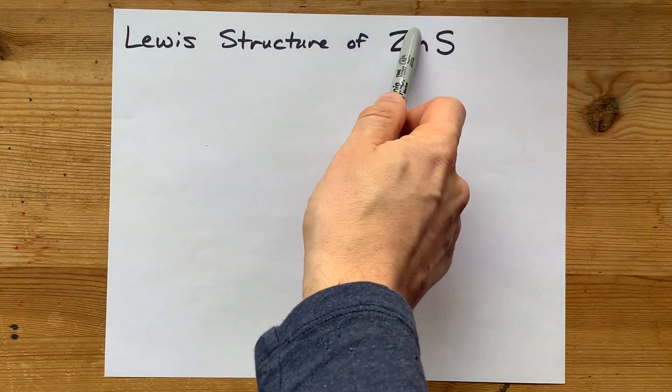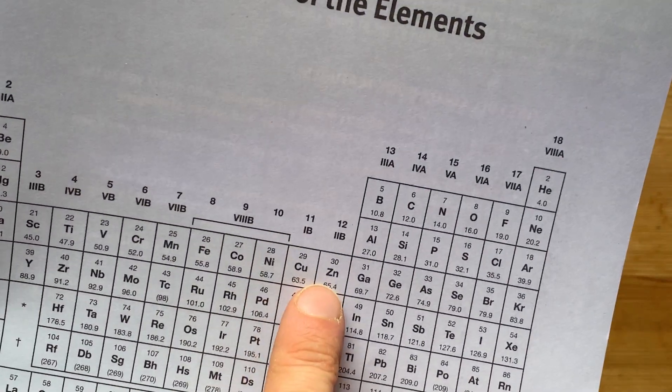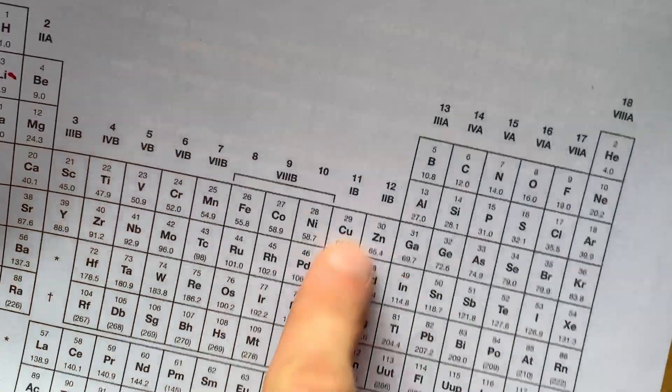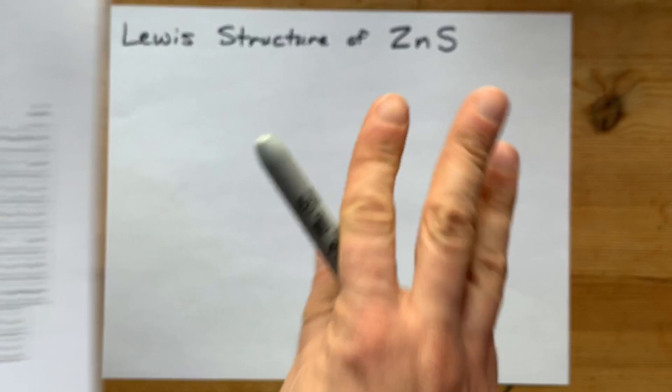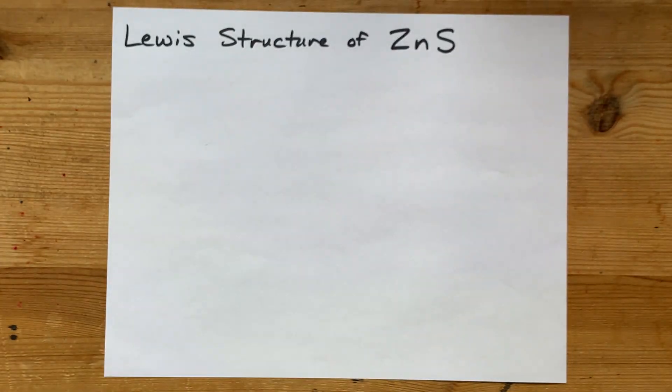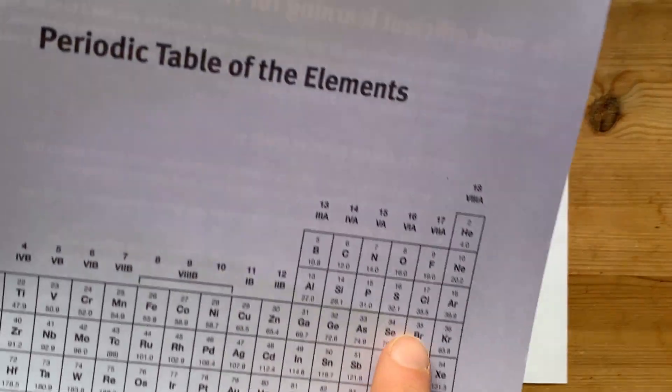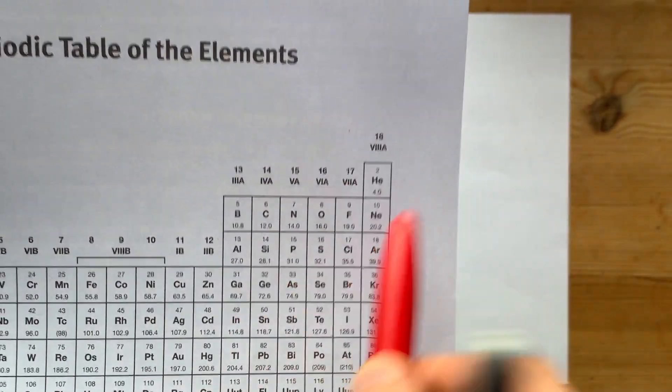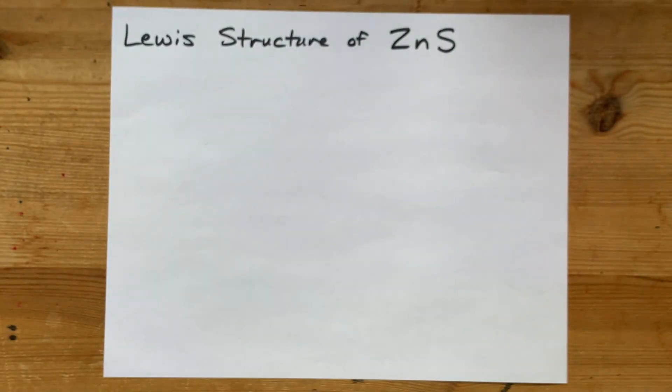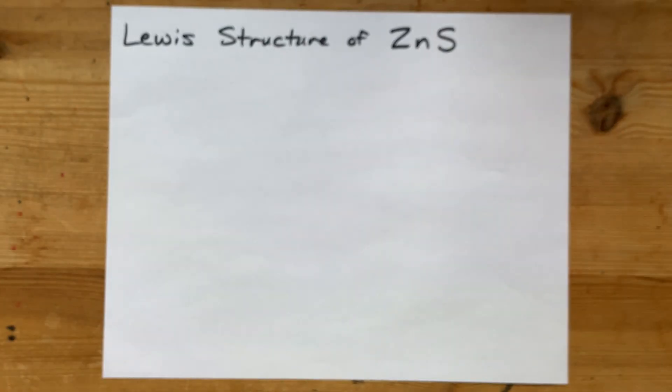We're going to draw the Lewis structure for zinc sulfide. Zinc is here in the transition metal block, even though it's not technically a transition metal. The point is it is a metal, and sulfur is over here above and to the right of the staircase that's written on better periodic tables than I have.